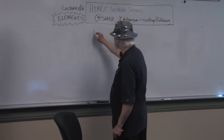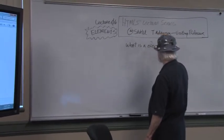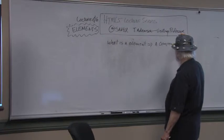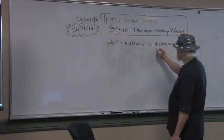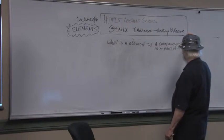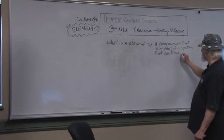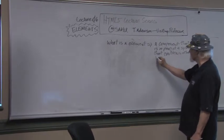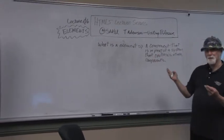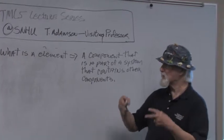What is an element? An element can be thought of as a component that is part of a system that contains other components. In other words, an element has parts, and those parts are treated as a whole — and it exists in a system that contains other elements that also have parts treated as a whole.